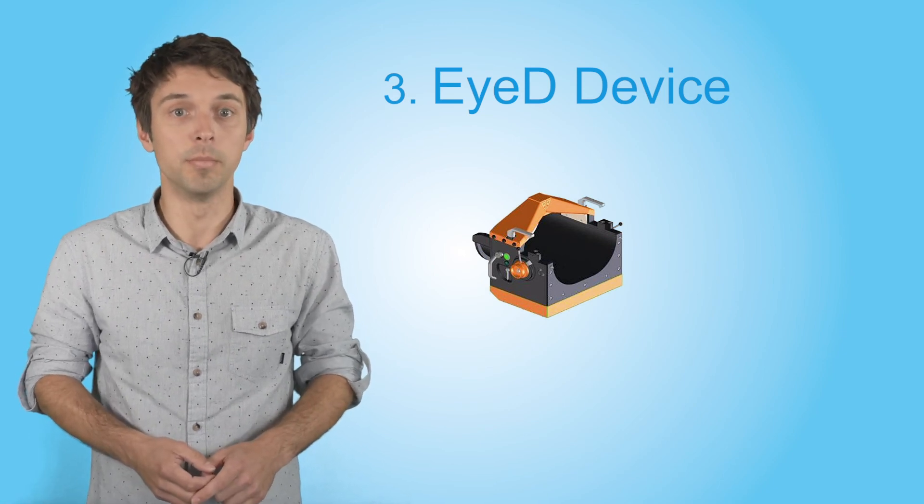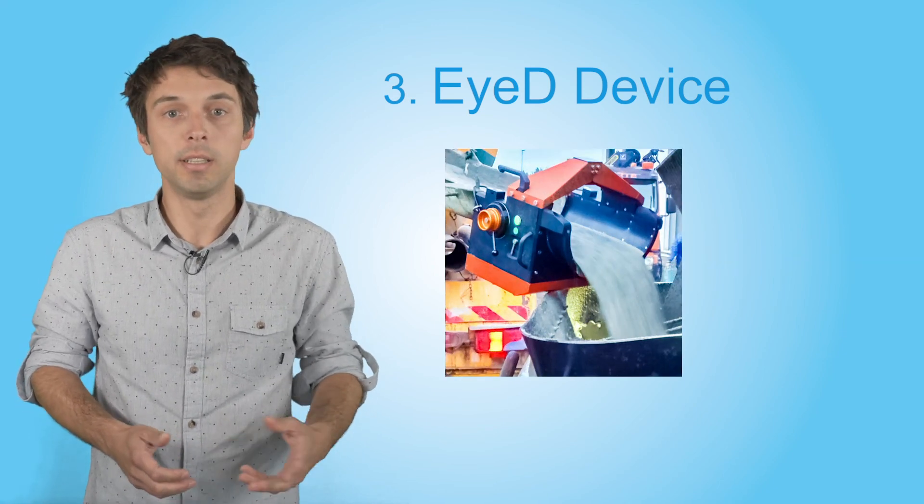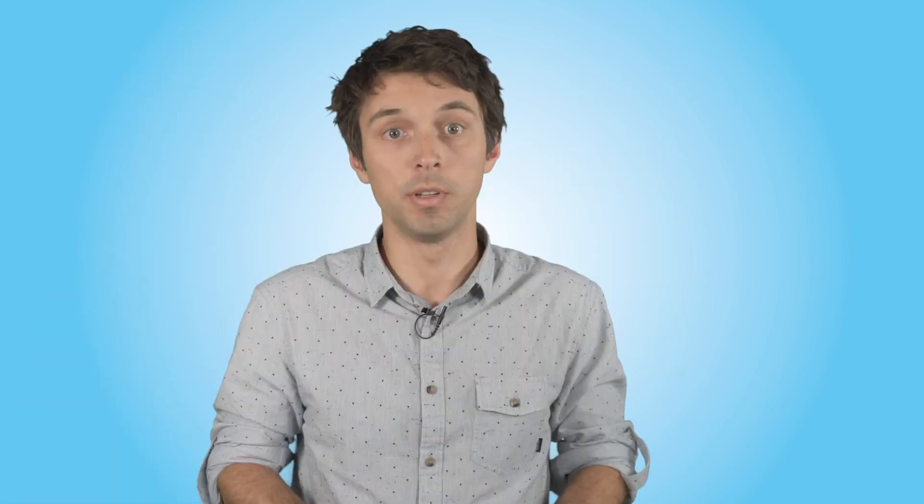This tool can be attached to the chute of a mixer and, much like a metal detector, it measures how many fibers are flowing through the chute, effectively monitoring the entire truckload of concrete.